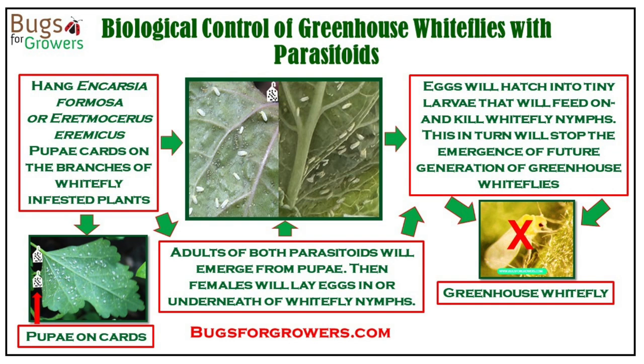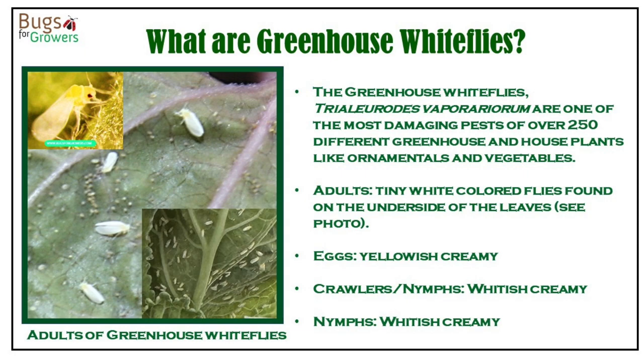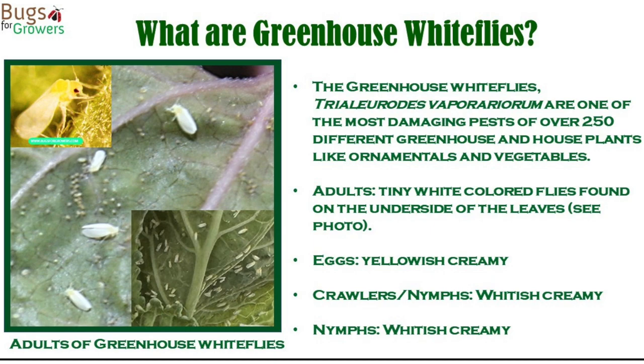Greenhouse whiteflies are tiny white-colored flies that live on the underside of leaves where they lay eggs. Eggs hatch into small nymphs. Among the species of greenhouse whiteflies,